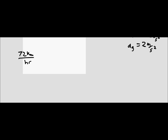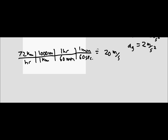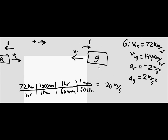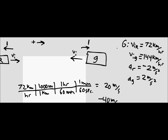Doing our dimensional analysis, we have seventy-two kilometers per hour, multiplied by one thousand meters per kilometer and one hour over sixty minutes over sixty seconds. That brings us to twenty meters per second for the red train. The green train is going at double the velocity, so the initial velocity of the green train is negative forty meters per second, negative because it's going in the opposite direction.